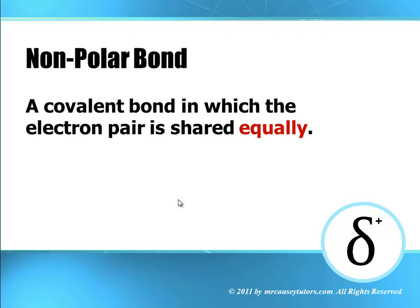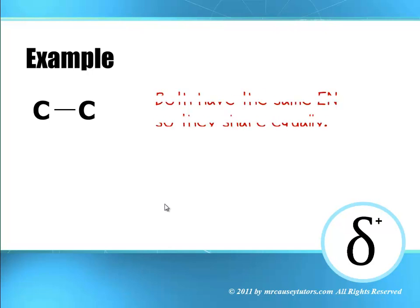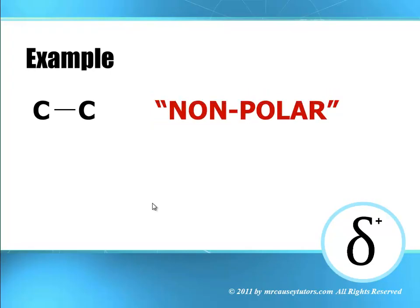A nonpolar bond is a covalent bond in which the electron pair is shared equally — nobody has it more than the other. Their electronegativities are either the same or very close. An example of that would be a carbon-to-carbon bond, or an oxygen-to-oxygen, or a nitrogen-to-nitrogen. Both have the same electronegativity, so they share the electrons equally. Nonpolar.